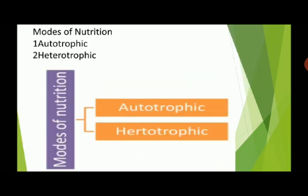First of all, we will understand modes of nutrition in plants. There are two modes of nutrition in plants: autotrophic and heterotrophic. All the green plants and some bacteria prepare their own food by the autotrophic mode of nutrition. Thus they are autotrophs, which means self nutrition. The word 'auto' means self and 'tropos' means nutrition, so autotrophic means self nutrition.